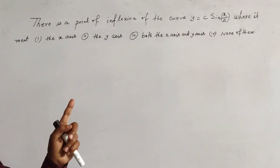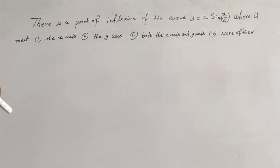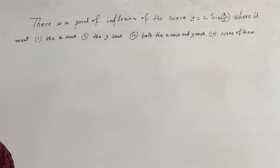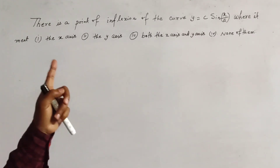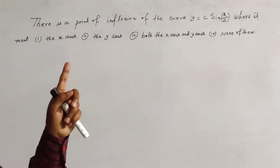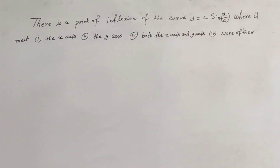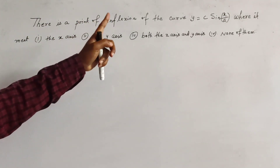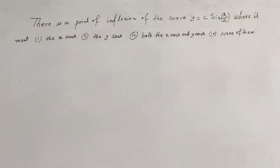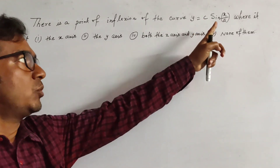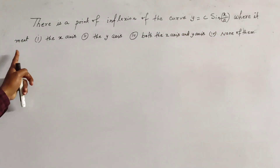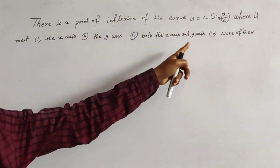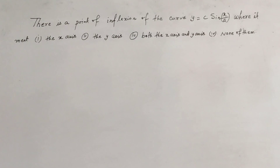This is a problem from the topic of concave, convex and point of inflection. Chapter 2 is a secondary actor MCQ type problem from Calcutta University. The question is: there is a point of inflection of the curve Y equal to C into sine X by A where it meets the X-axis, the Y-axis, both the X and Y-axis, or none of them.